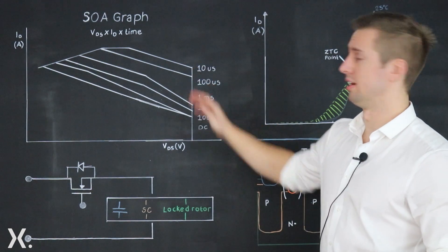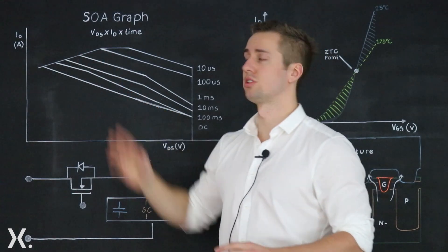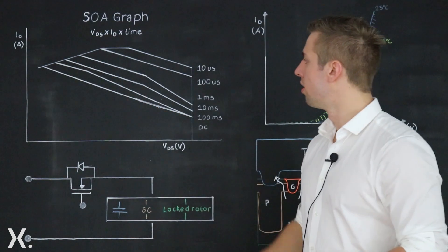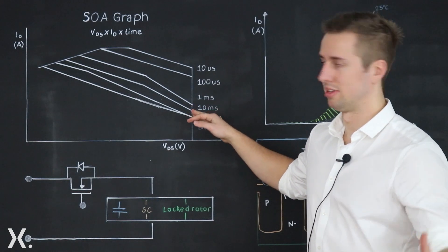Now if we have a look at the SOA graph here, we have drain source voltage on the x-axis and on the y-axis we have drain current. The amount of power the device can handle is dictated by the amount of time the device is under that power.